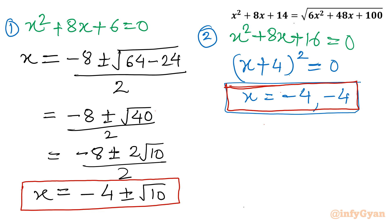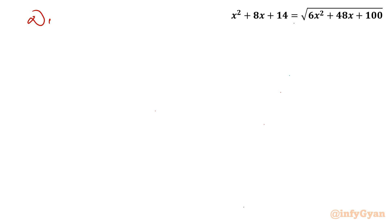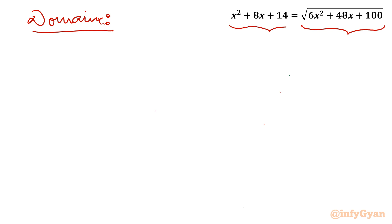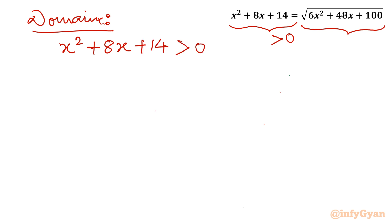Now which solutions will we accept and which will we reject? Let us find the domain of the equation. The right hand side has a square root, so for real solutions the expression under the root must be non-negative, meaning the left hand side x² + 8x + 14 must be positive. Let us factorize or find the roots of x² + 8x + 14 = 0.